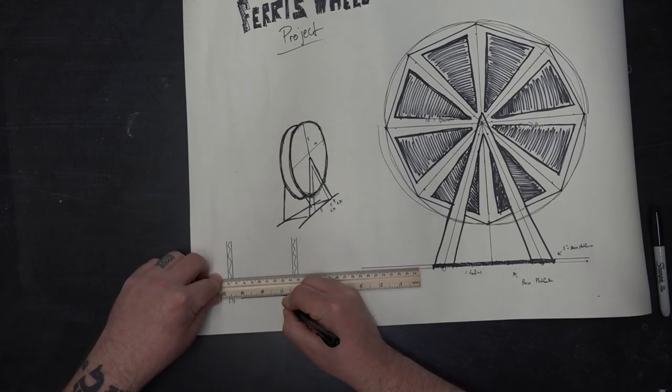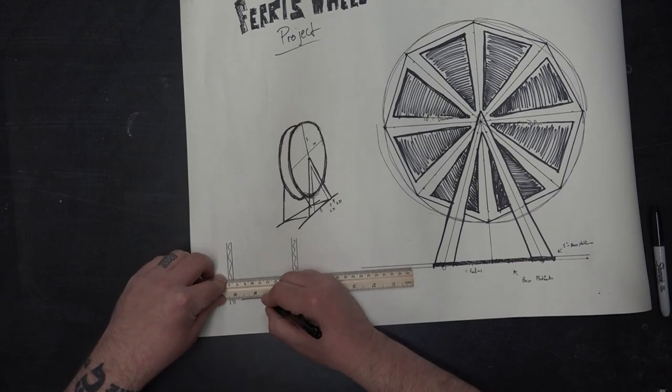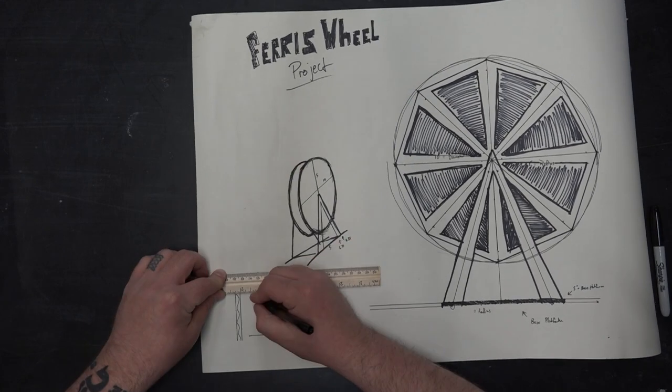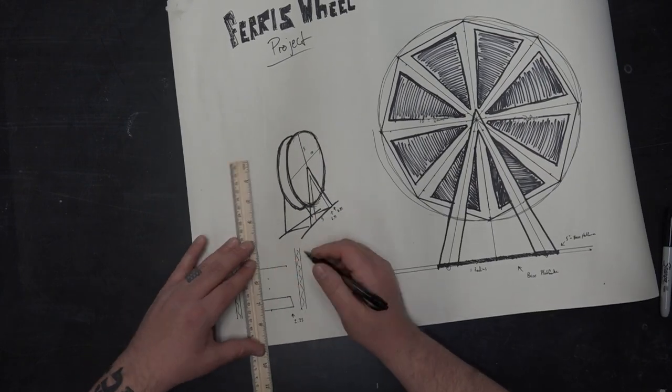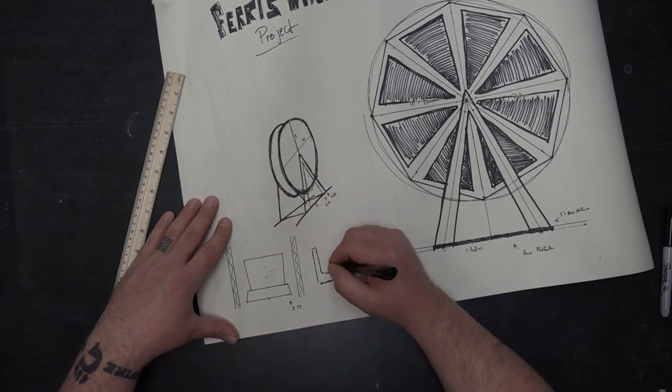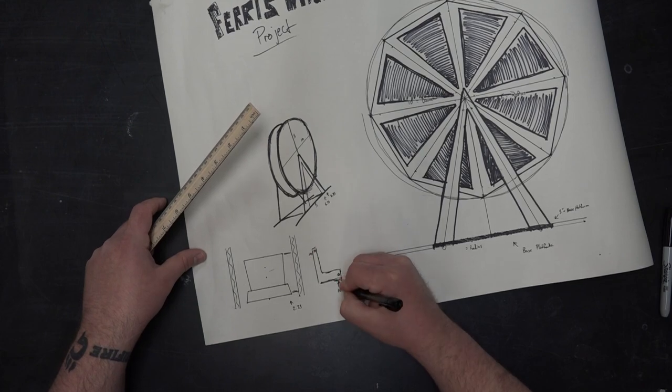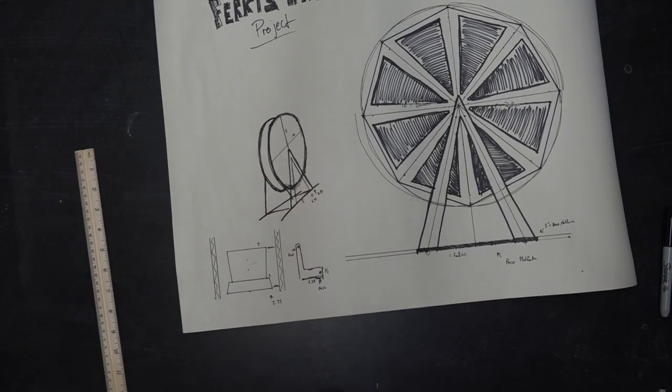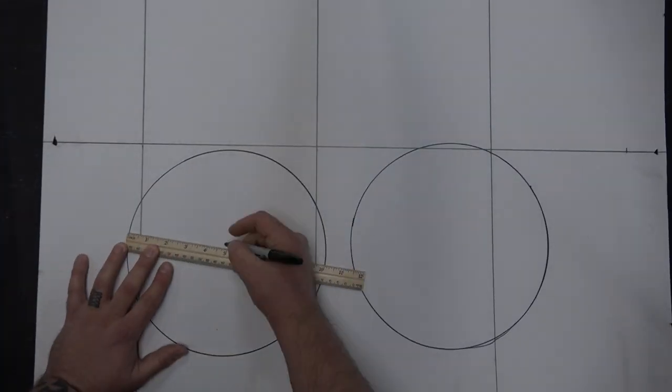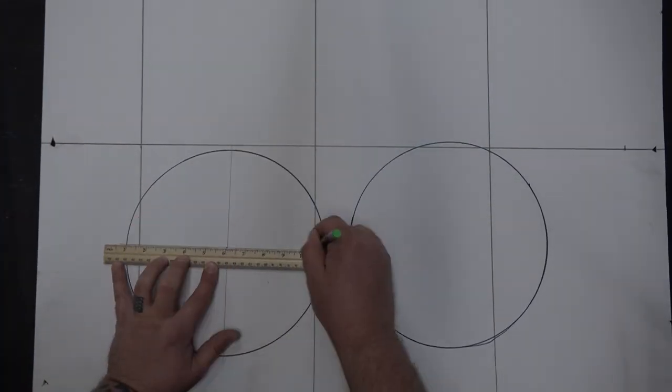So using just the ruler, I'm breaking down different sections of this piece. Now I start off with, it has to be even because if I have to do something odd, I really need a protractor for that because once you start getting into the odd measurements, you need to know the angle shifts of the different pieces.